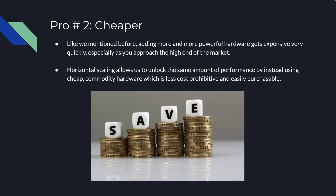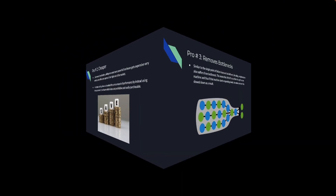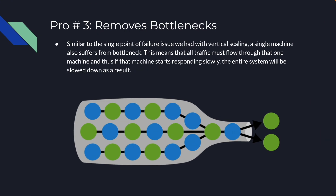Another pro is that it's cheaper. Adding more and more powerful hardware gets expensive very quickly, especially as you approach the high end of the market. Horizontal scaling allows us to unlock the same amount of performance by instead using cheap commodity hardware, which is less cost-prohibitive and easily purchasable.